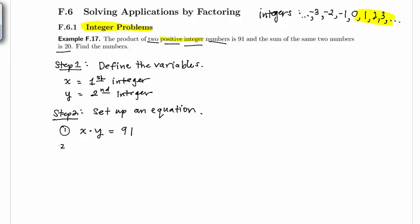The second part of the statement states the sum of the same two numbers is 20. Meaning that if I add up the two numbers I would get a sum of 20.